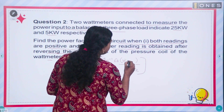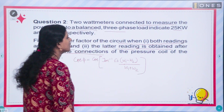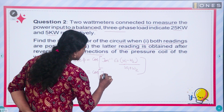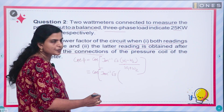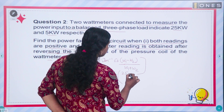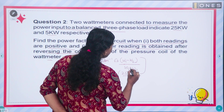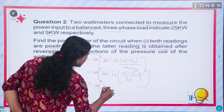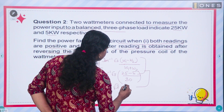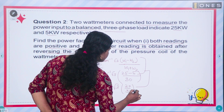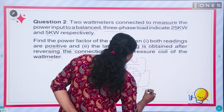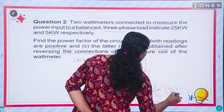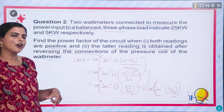For the case where both readings are positive, the first reading is positive. Using the formula: cos phi equals cos of tan inverse of root 3 into (W1 minus W2) divided by (W1 plus W2). Substituting W1 equals 25 kilowatts and W2 equals 5 kilowatts: we get cos of tan inverse of root 3 into (25 minus 5) divided by (25 plus 5), which is 20 by 30, simplifying to tan inverse of (2 by root 3).